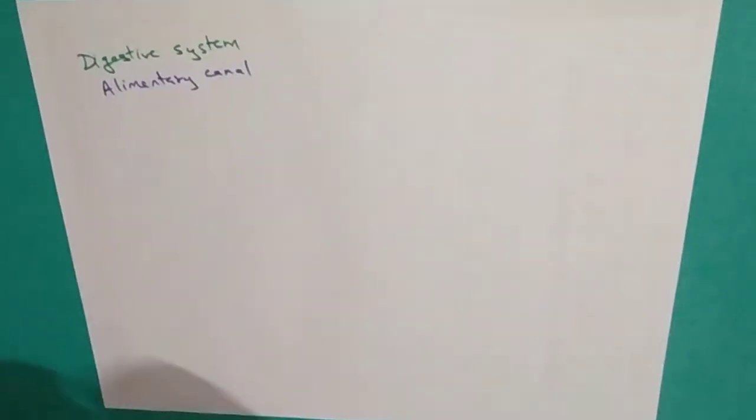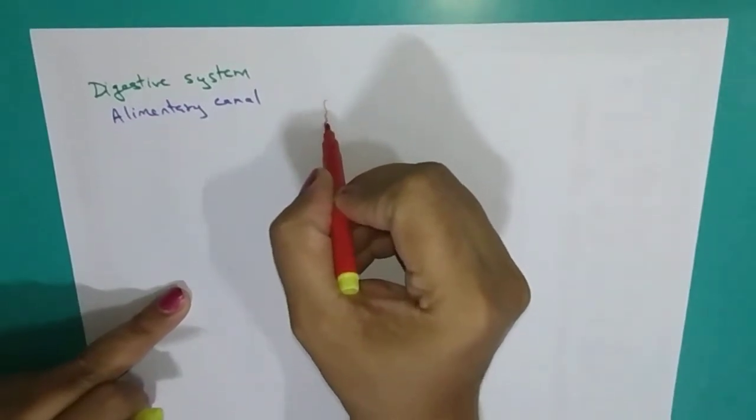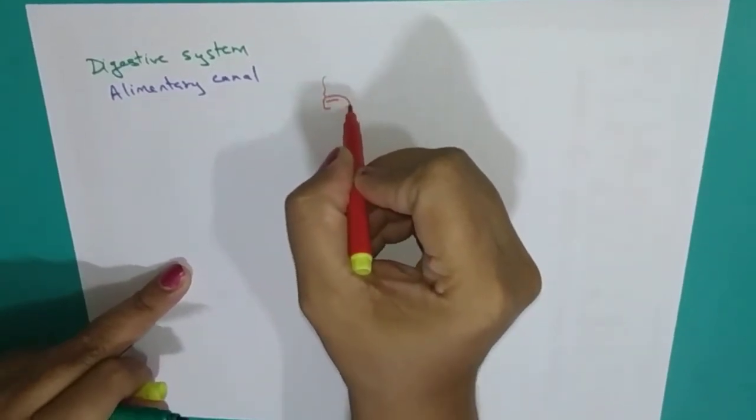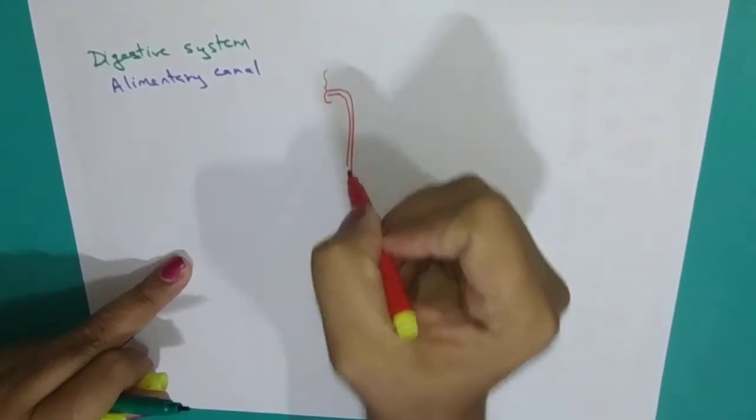Let us see the diagram. Now this digestive system, it starts from the mouth. Now, the long pipe is called as esophagus.